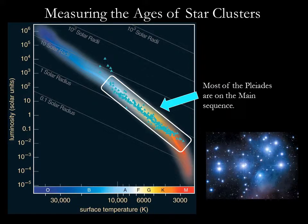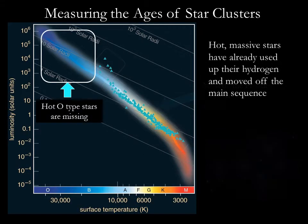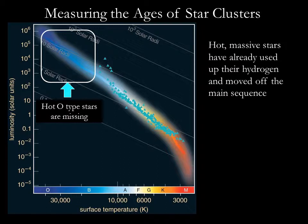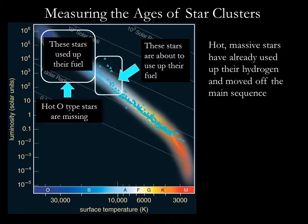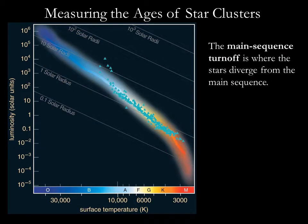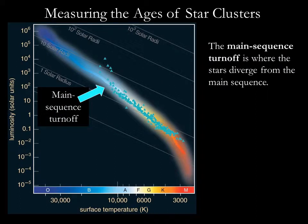Consider the Pleiades. Most of the stars in the Pleiades are on the main sequence, with one exception. At the upper end of the main sequence, stars trail away to the right. Therefore, the hot, short-lived stars of spectral type O are missing from the main sequence. These stars are missing because the Pleiades cluster is old enough for its main sequence O stars to have already ended their hydrogen-fusing lives, but it's young enough that some of its spectral type B stars still reside on the main sequence. The precise point on the HR diagram at which a cluster of stars diverge from the main sequence is called the main sequence turnoff point. For the Pleiades, it occurs around spectral type B6.